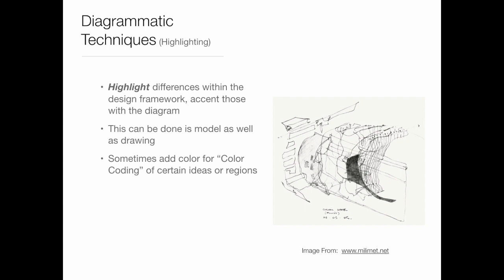Let's move on to highlighting. Basically, the point is we're highlighting differences within the design framework. The last one was about solid and void — a big physical contrast. This is about pointing your attention at one specific thing. It can be done in model and in drawing. Sometimes the easiest way of doing this is color coding something — we put some color on it to say 'look here, this is what's happening here.' Here we have an old building and a new building together with various floors highlighted: the old building shown in yellow, the new building shown in red.